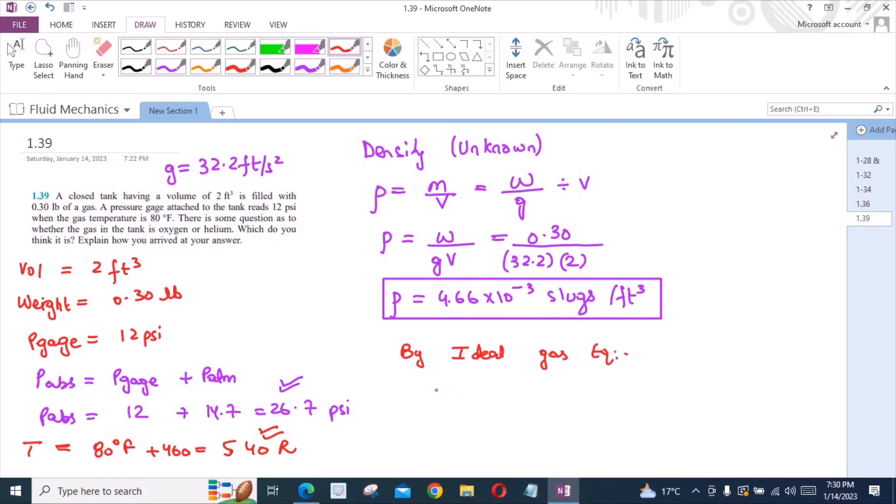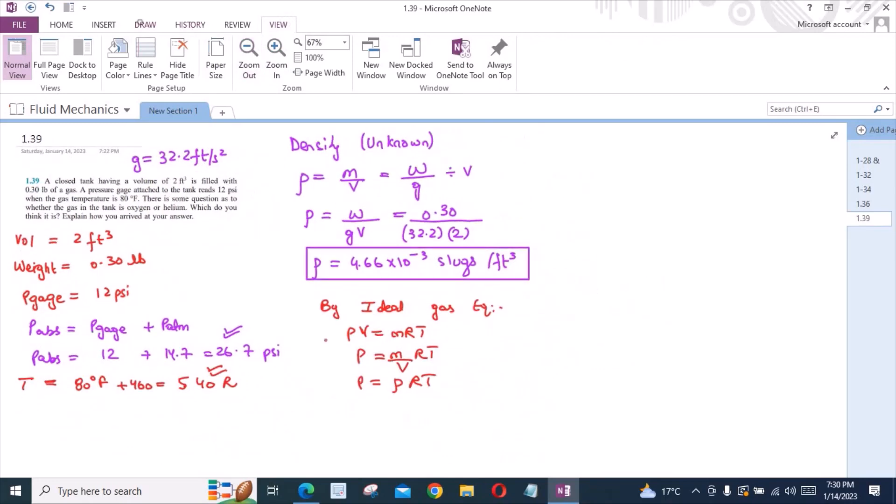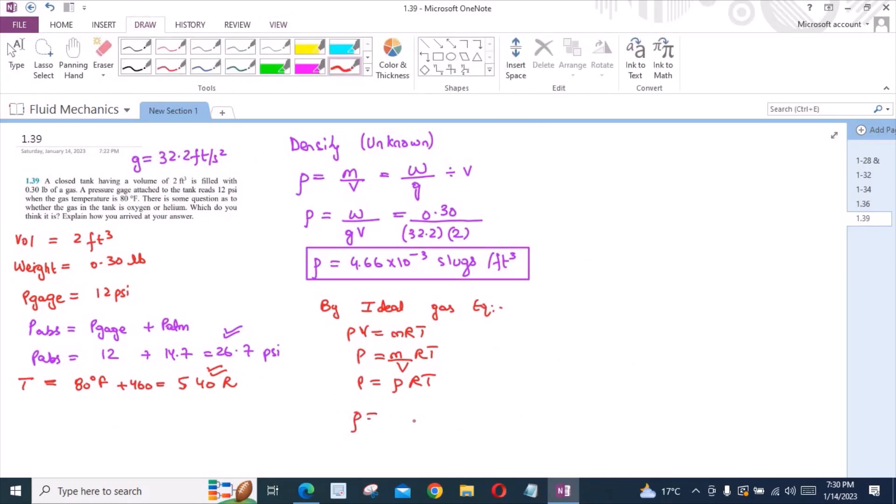Which is equal to pressure times volume equals mass times gas constant times temperature. From here, P is equal to M upon V times R times T. And pressure is equal to density times gas constant times temperature. From here, density could be written as pressure upon gas constant times temperature.